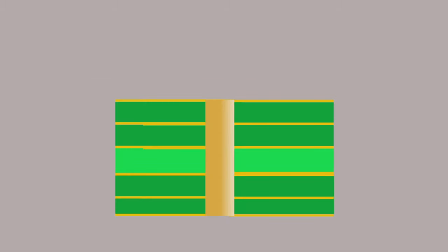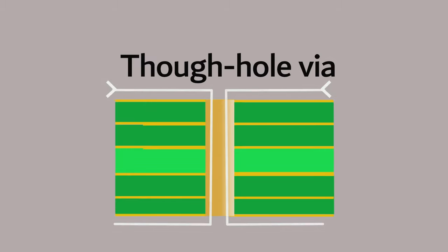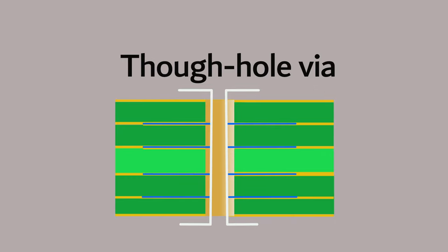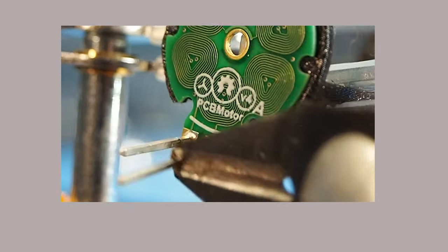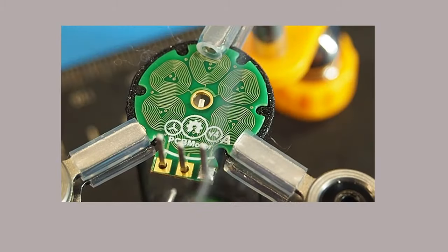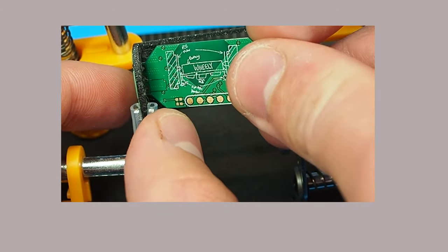The through-hole via is the most common type of the via in PCB manufacturing, which connects the inner and outer layers and passes through the entire board. It is usually used for internal interconnection of the board or as a mounting hole for components.